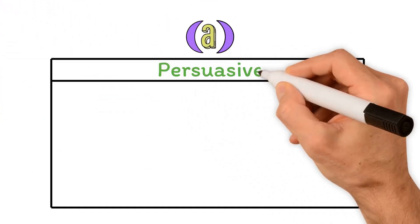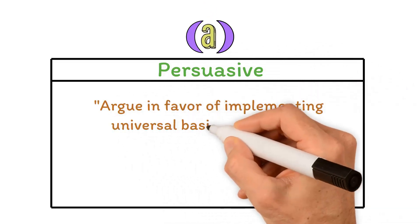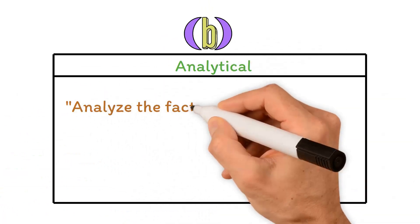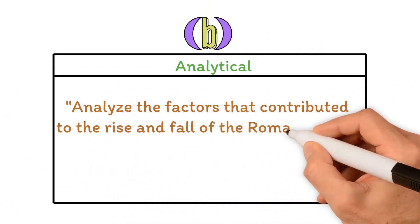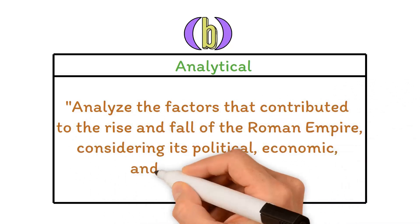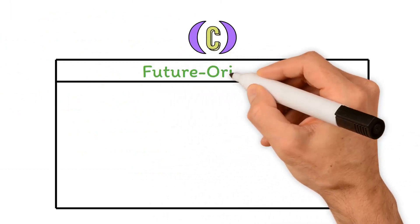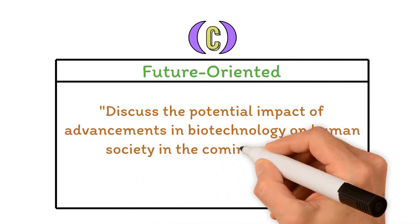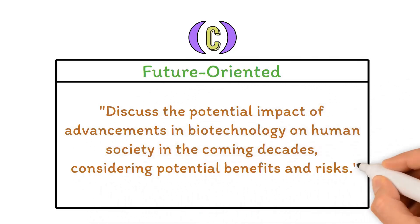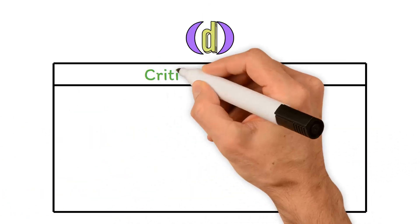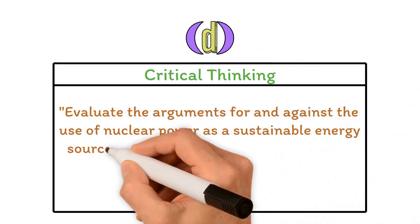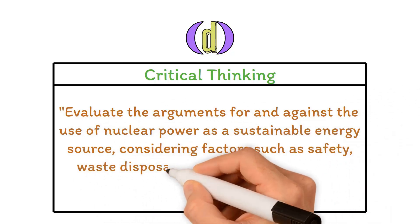A. Persuasive: Argue in favor of implementing universal basic income as a means of addressing economic inequality and promoting social stability. B. Analytical: Analyze the factors that contributed to the rise and fall of the Roman Empire, considering its political, economic, and social systems. C. Future-oriented: Discuss the potential impact of advancements in biotechnology on human society in the coming decades, considering potential benefits and risks. D. Critical Thinking: Evaluate the arguments for and against the use of nuclear power as a sustainable energy source, considering factors such as safety, waste disposal, and carbon emissions.